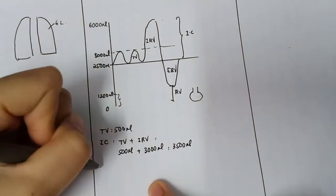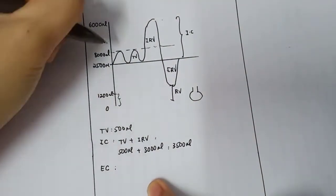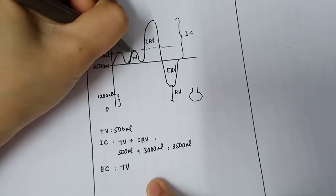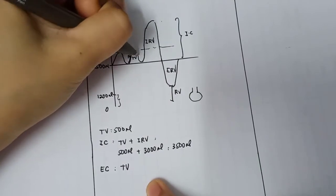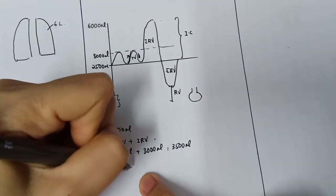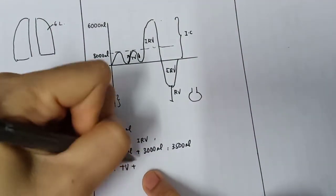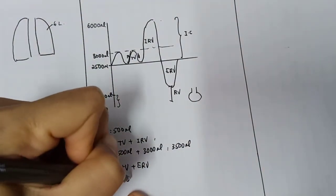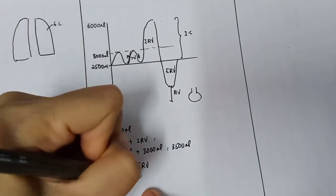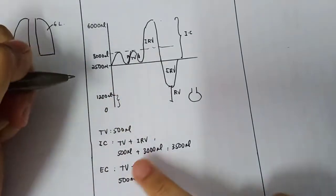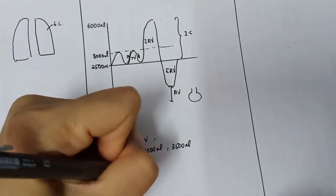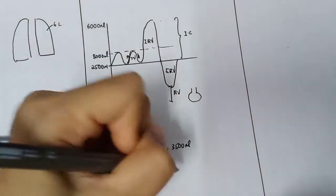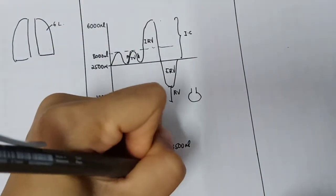What is the expiratory capacity? That's basically the tidal volume plus the expiratory residual volume. So we have 500 ml tidal volume plus the expiratory residual volume of 1,300 ml, giving us about 1,800 ml for the expiratory capacity.